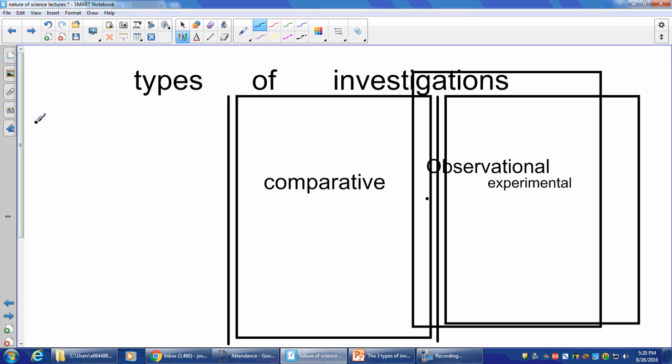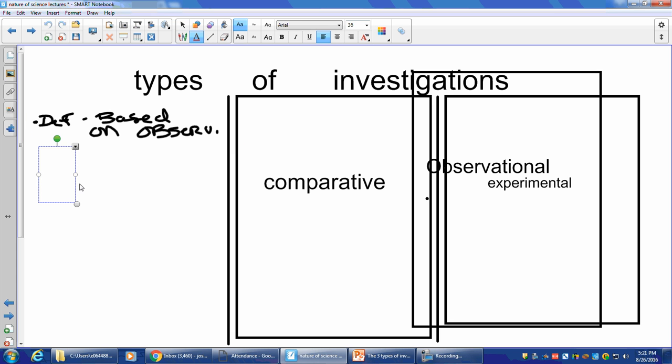It is based mainly on observations. That's our definition - based on observation. Now, our observations are based on the five senses. So the observations are based on five senses.